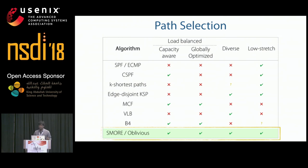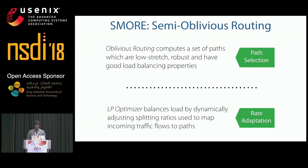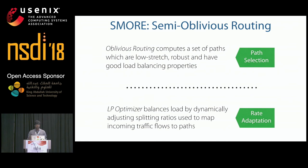So the question is: can we do better? The answer is yes. Going back to our traffic engineering model of static path selection and dynamic rate adaptation, SMORE proposes using oblivious routing to select paths that are low-stretch, robust to failures, and provide good load balancing. SMORE then combines these paths with dynamic rate adaptation, using an LP to optimize splitting ratios to map traffic to paths and achieve better performance.